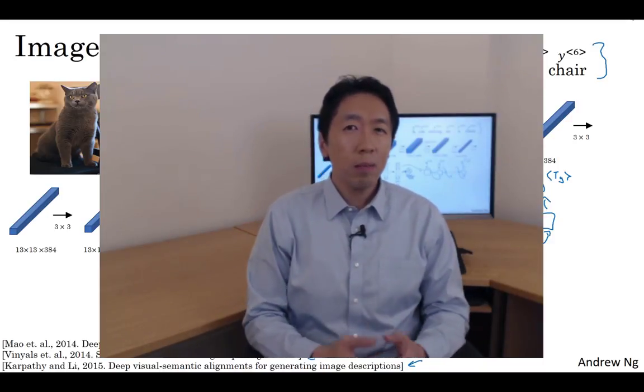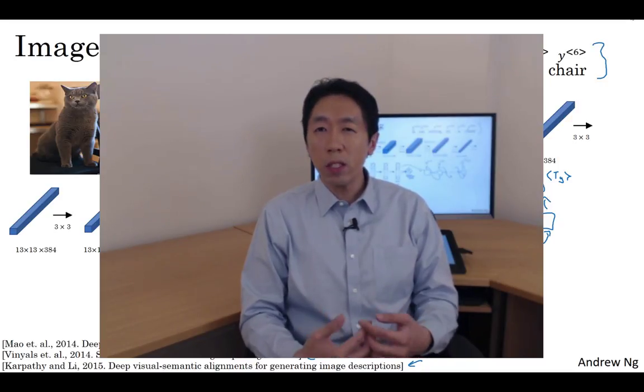So you've now seen how a basic sequence-to-sequence model works, or how basic image-to-sequence or image captioning model works. But there's some differences between how you run a model like this to generate a sequence compared to how you were synthesizing novel text using a language model. One of the key differences is you don't want a randomly chosen translation, you maybe want the most likely translation. Or you don't want a randomly chosen caption, but you might want the best caption, the most likely caption. So let's see in the next video how you go about generating that.